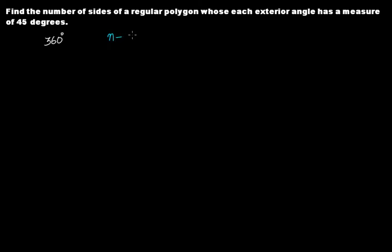The sum of the exterior angles of any polygon is equal to 360 degrees. Let's assume that the regular polygon has n sides. If the regular polygon has n sides, it means that it will have n vertices, and therefore n exterior angles.